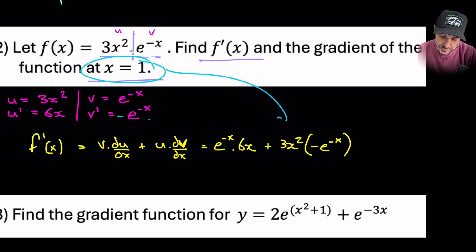So we want to substitute 1 into this expression. So here we go. I'm just going to put 1 into it and get a value. So we have e^(-1) times 6, so that would be 6. This whole expression is negative. 3 times 1^2 is just 1, and then this is e^(-1).